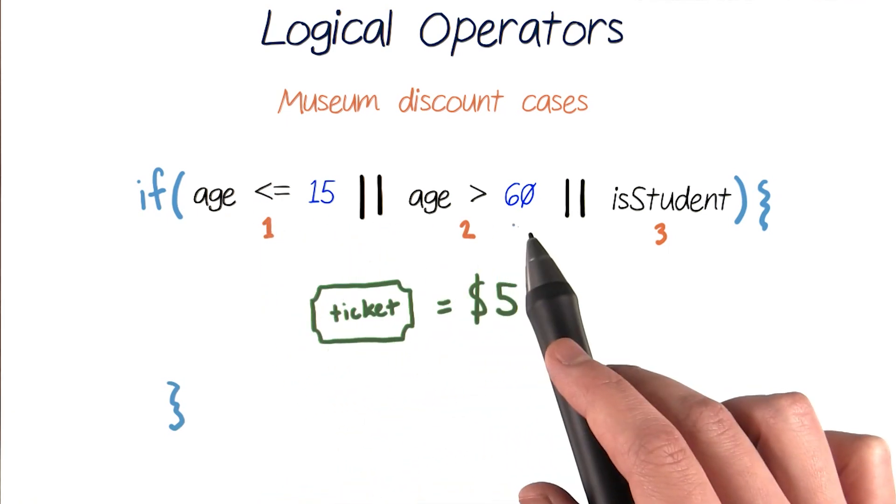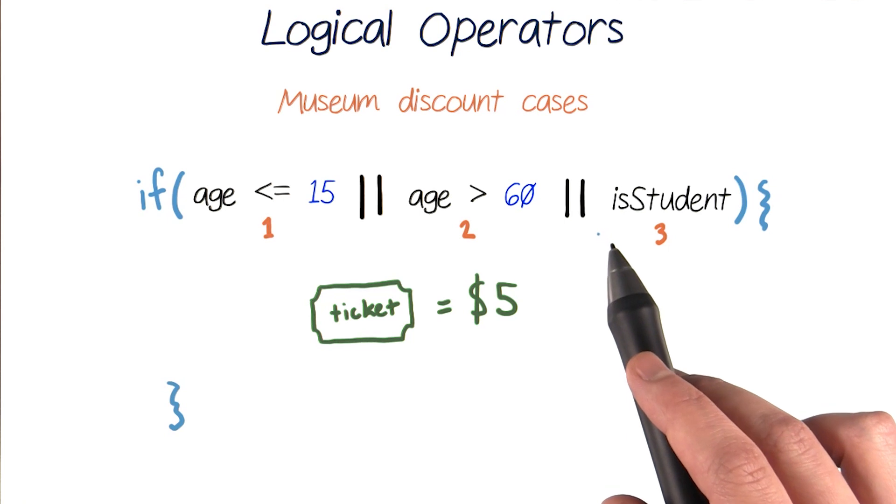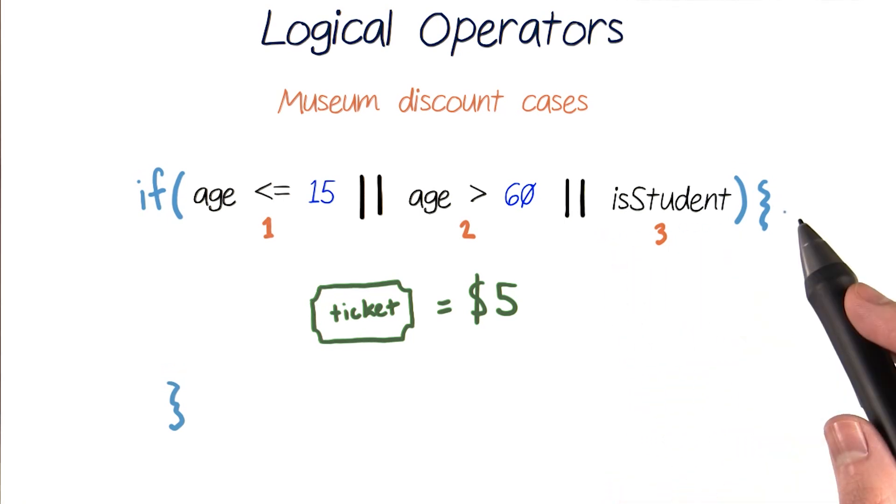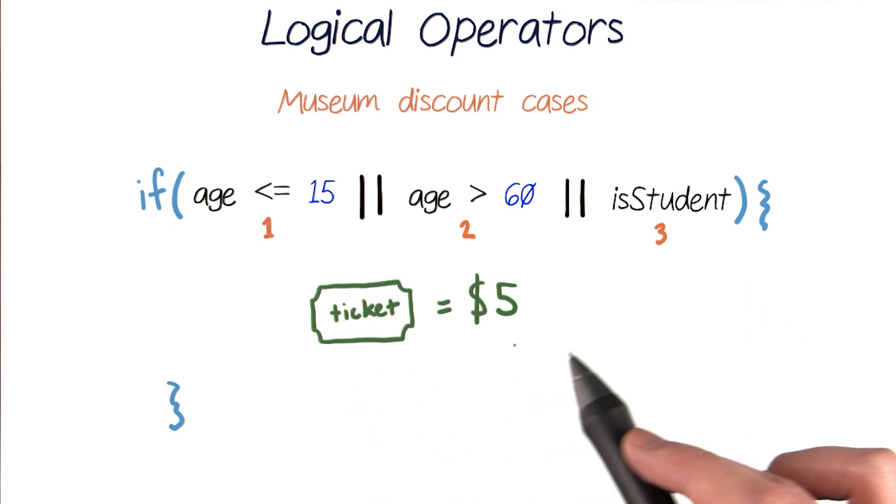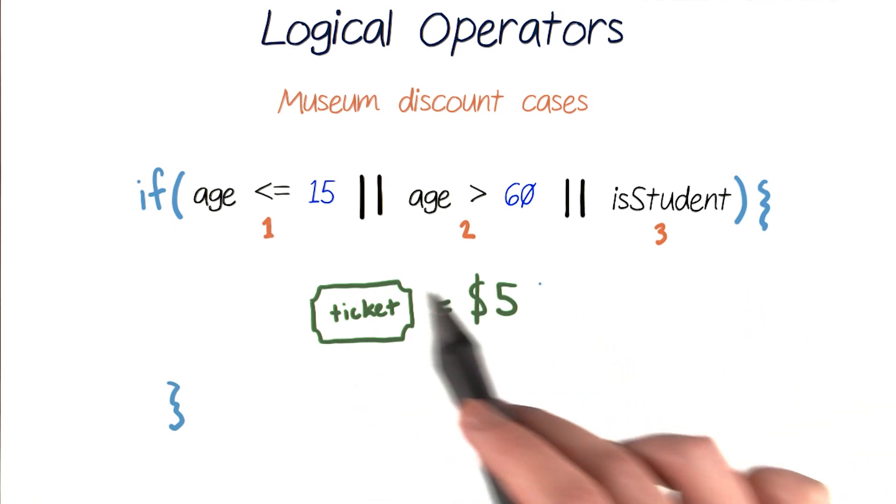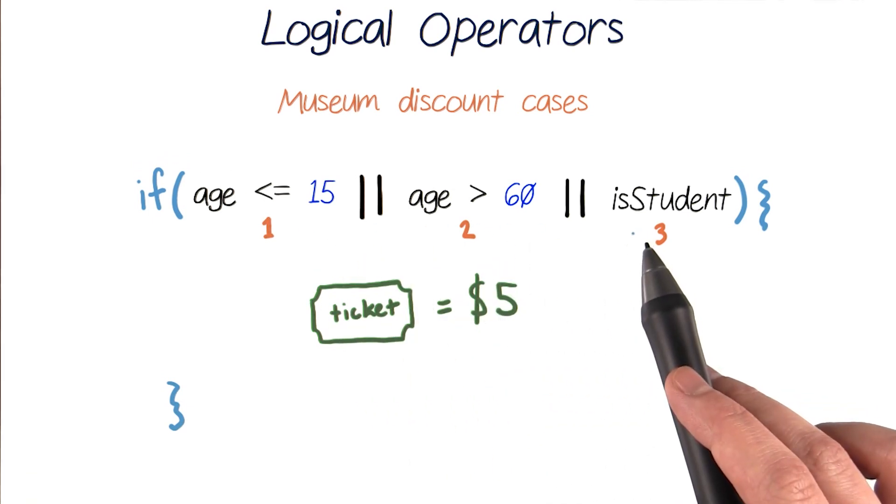And this checks if age is less than or equal to 15, or age is greater than 60, or if someone is a student. And if any one of those three conditions is true, we'll enter our if block of code and set our ticket to a discount price of five. And it's as simple as that. It's each of our previous conditions that we tested, separated by logical operators.